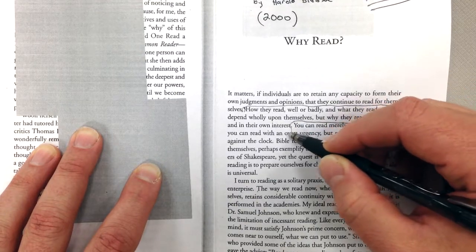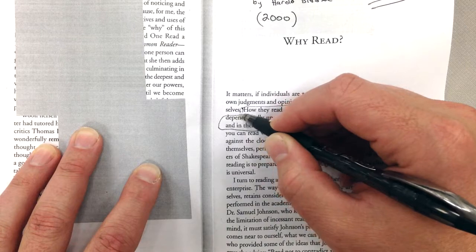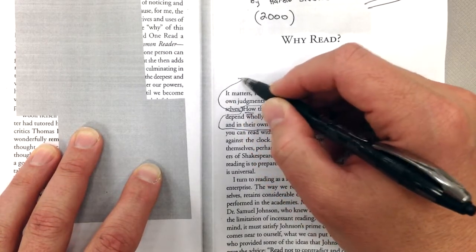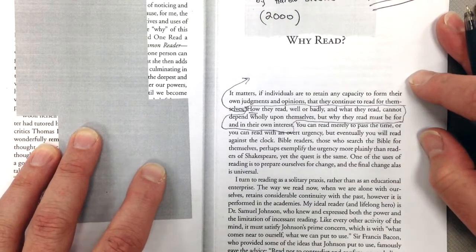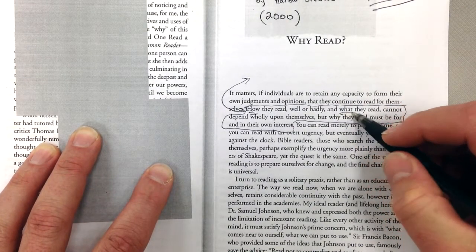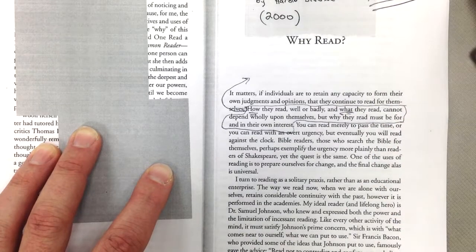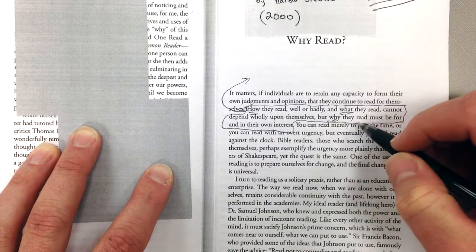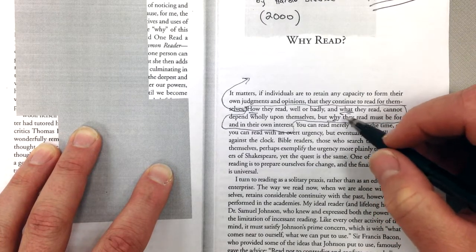So how you read doesn't just depend on you, right? Because the how is something that we work on. That's something we've been working on all year. I'm here to help you. Mr. Daniels is here to help you. In what they read, I'm asking you to read certain things, but why they read must be for their own interest.